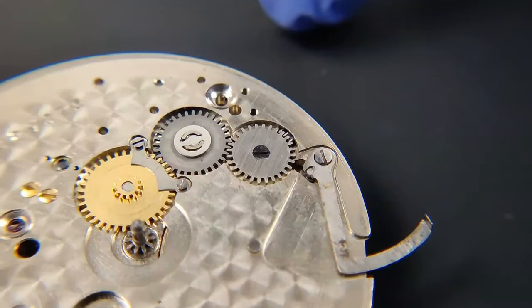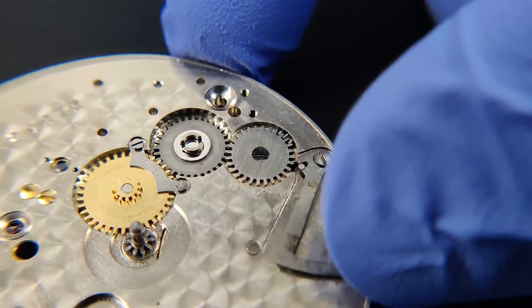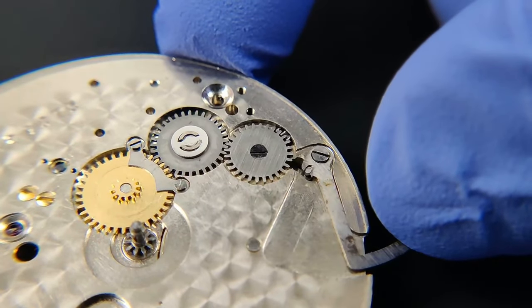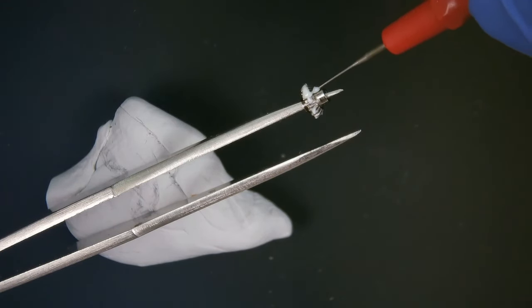When we pull the setting lever, look at the setting pin lifting away from the intermediate setting wheel. And this allows it to rise just enough to mesh with the minute wheel. Almost done with the winding works.